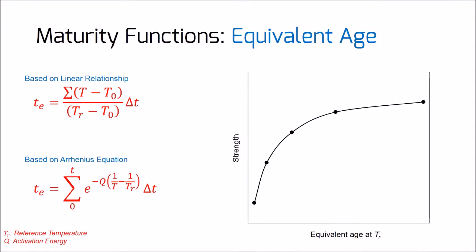Another method used in maturity calculation is the equivalent age method. In this method, an equivalent age function is developed where the equivalent age represents the duration of the curing period at the reference temperature that would result in the same maturity as curing at other temperatures. Despite the fact that the Arrhenius function is scientifically more accurate, the Nurse-Saul function is more commonly used by the concrete industry for two main reasons: its accuracy is adequate for most field applications, and it is relatively simpler compared with the Arrhenius function.